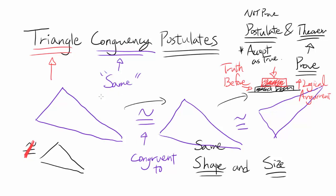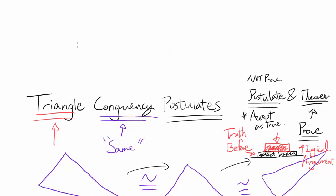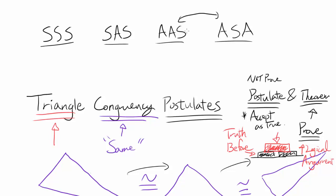There are a few triangle congruency postulates you have to know, especially as you go further along and wish to prove more complicated geometric theorems. These are: SSS, SAS, AAS, and ASA. You can argue that AAS can be proven from ASA, and you're right, but for simplicity in this video I'll treat these four as separate and mention the connection between AAS and ASA. Here S means side and A means angle.